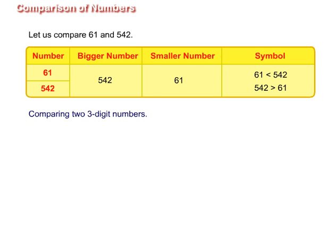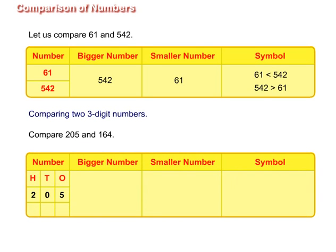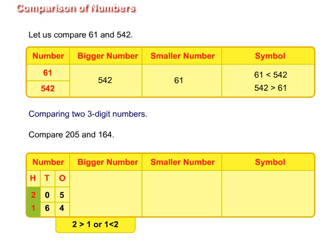Comparing two three-digit numbers. If we compare 205 and 164, we will find that both of them have three digits. So, we will compare the digits at the hundreds place in both numbers. 205 has two in the hundreds place and 164 has one in the hundreds place. Since two is greater than one, we can say that 205 is greater than 164, or 164 is less than 205.